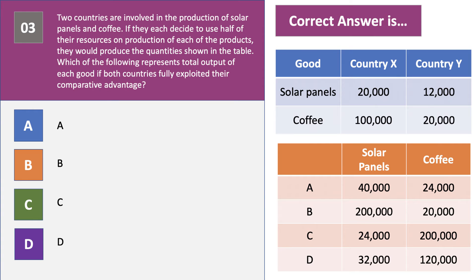Here's question three. Two countries are involved in the production of solar panels and coffee. If they each use half of their resources on production of each product, they will produce the quantities shown in the blue table. Which of the orange tables represents the total output of each good — solar panels and coffee — if both countries fully exploited their comparative advantage? Take a moment to press the pause button and have a go at the question.